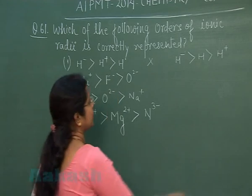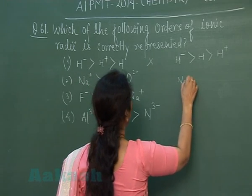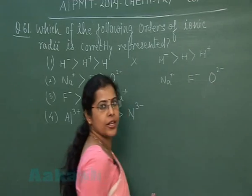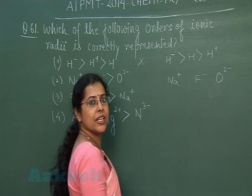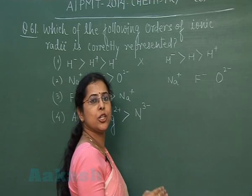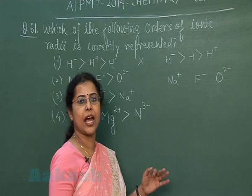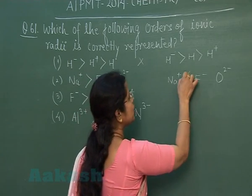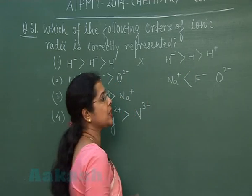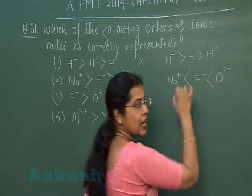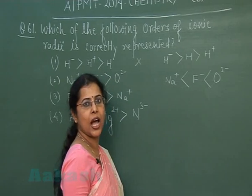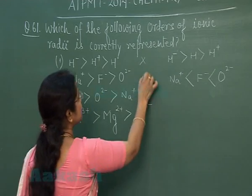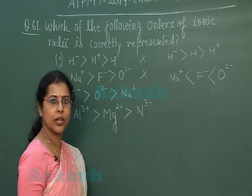In the second option, the ions given are Na⁺, F⁻, and O²⁻ — these are isoelectronic species. A cation is smaller than an anion. The correct order should be Na⁺ smallest, then F⁻, then O²⁻ largest. But the given order places Na⁺ as the largest ion, so this option is also incorrect.